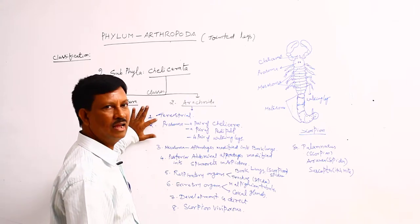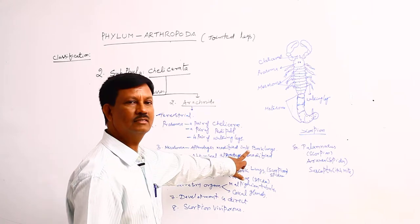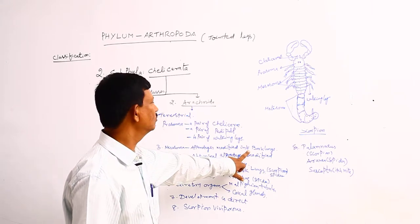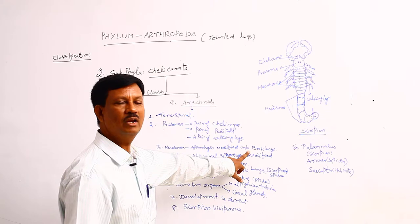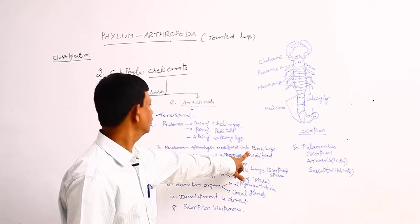As these animals are present on land, terrestrial, lung-like respiratory organs are found in these animals. They are known as the book lungs. With the help of the book lungs, they absorb the oxygen from the atmosphere and carbon dioxide is sent out.